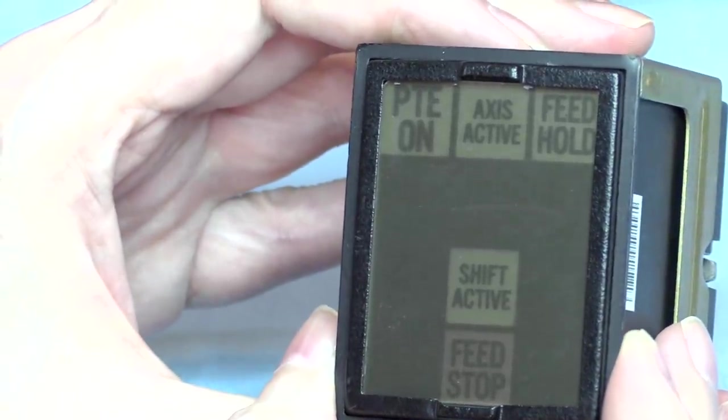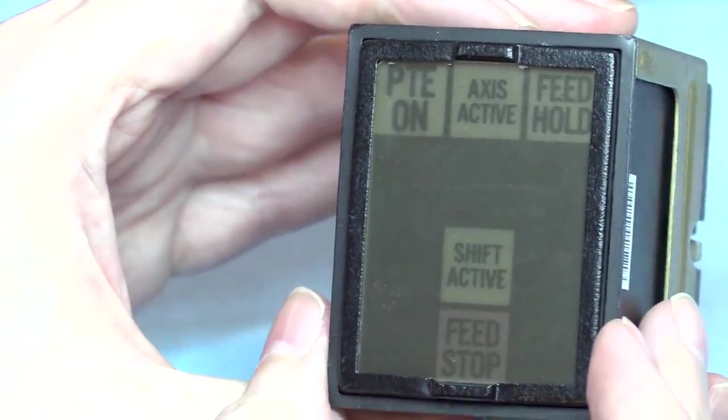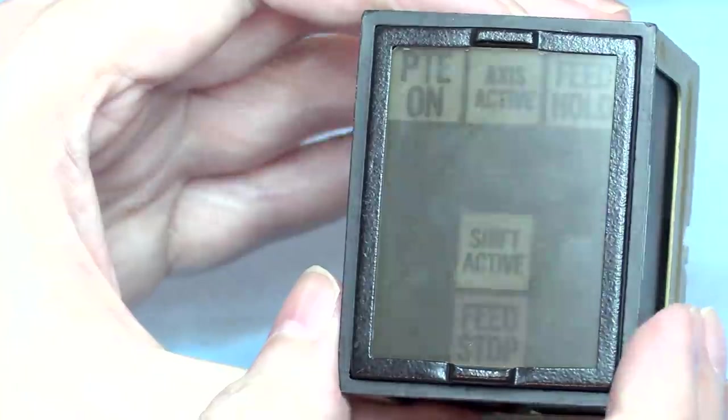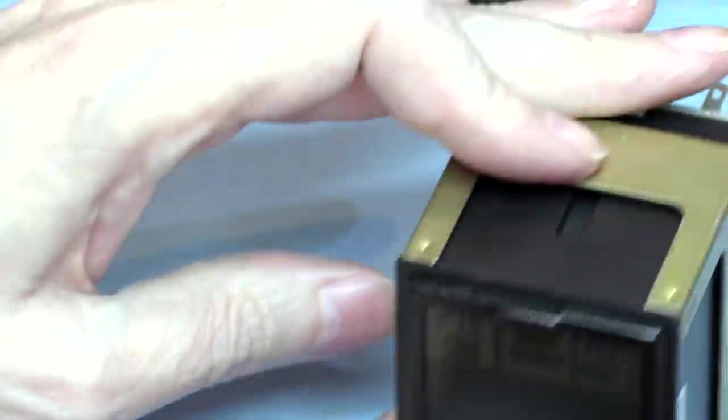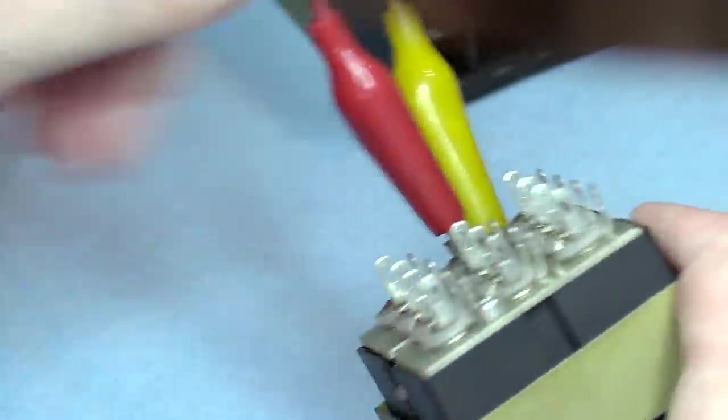On the other indicator we can actually see the messages: PTE on, access active, feed holds. This doesn't seem very exciting, but I'm going to hook it up because it says 28 volt lamp.